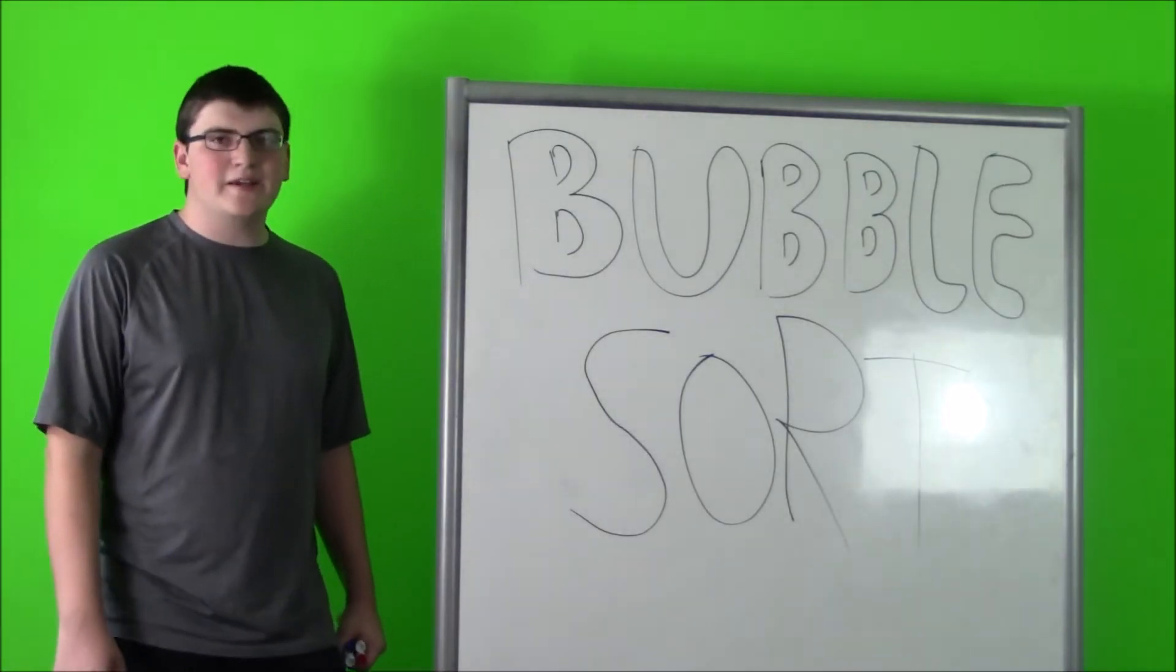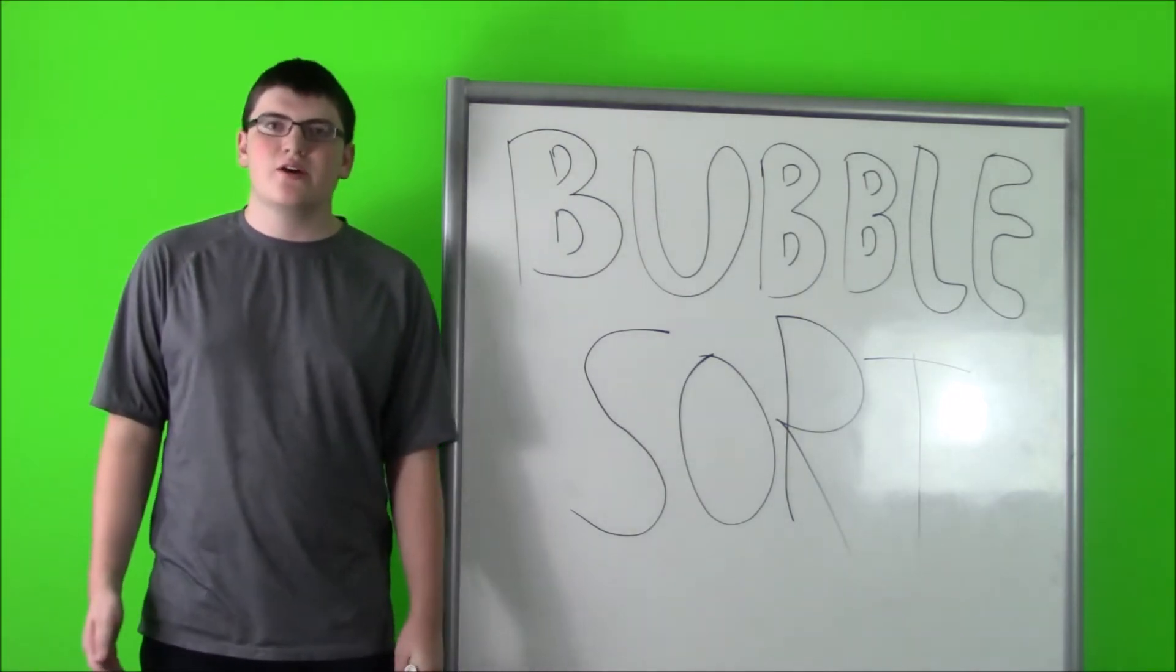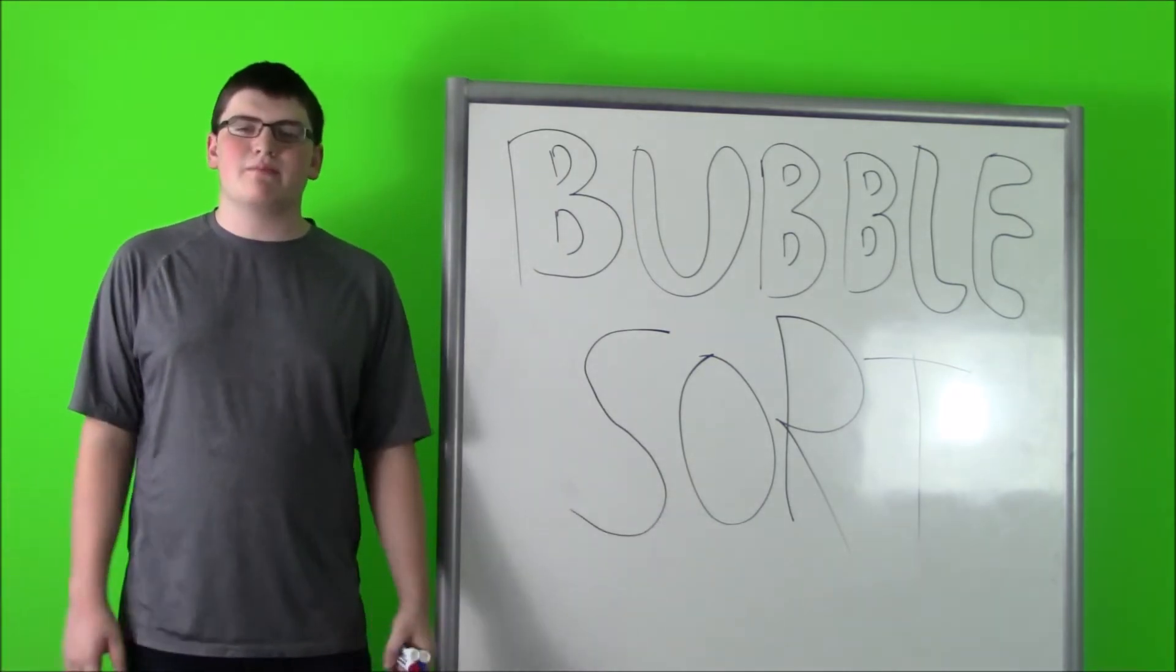The first sort I'm going to talk about today is bubble sort. Bubble sort is a very simple sort used by computer scientists when you want to sort a list that won't exceed a given amount.